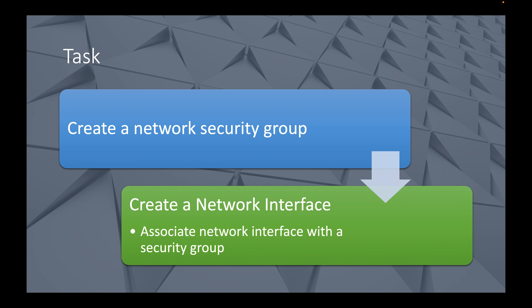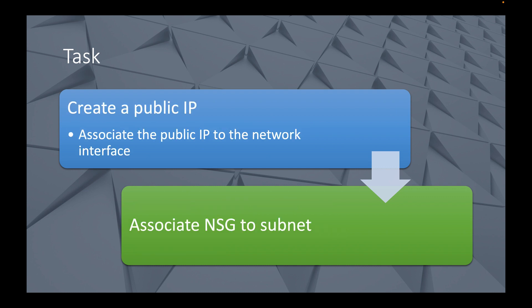In the first part, we created a network security group, created a network interface, and associated that network interface with a security group. In this video, we're going to concentrate on creating a public IP address, associating the public IP address to the network interface, and then associating the NSG to the subnet.